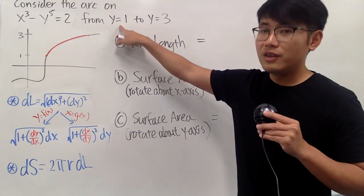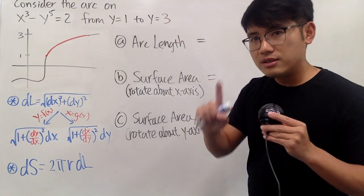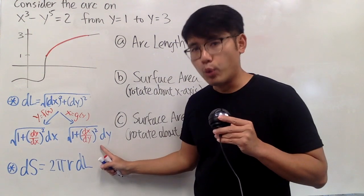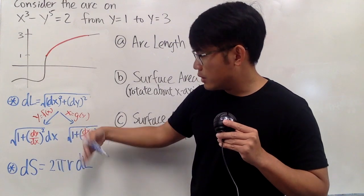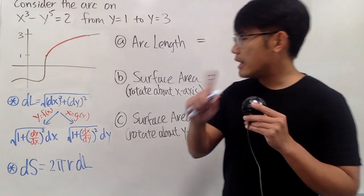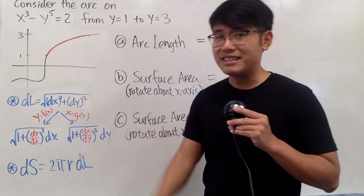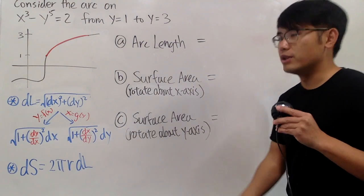Well, we were given that y is going from one to three, so that means we should be in the y world, right? Because when you have the dy, that means the integral is set up to go from y to the first number to the second number for the y. That means we should get the x by itself. So let's make that happen and then do all the derivatives and then do the rest of the questions.